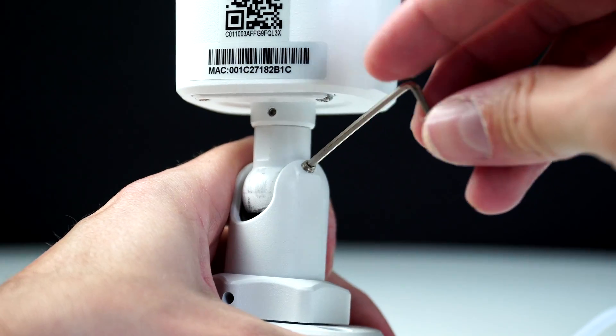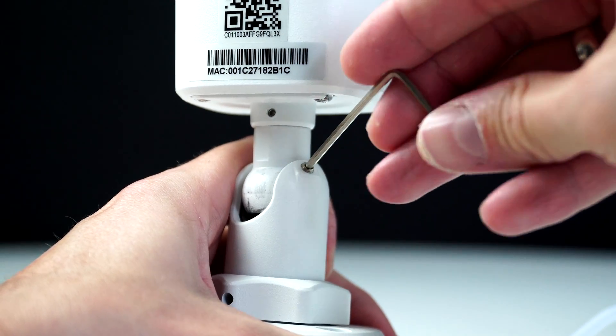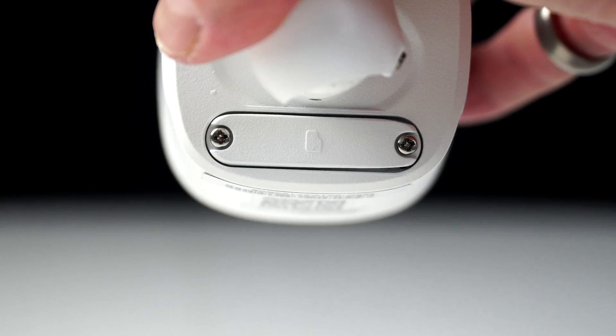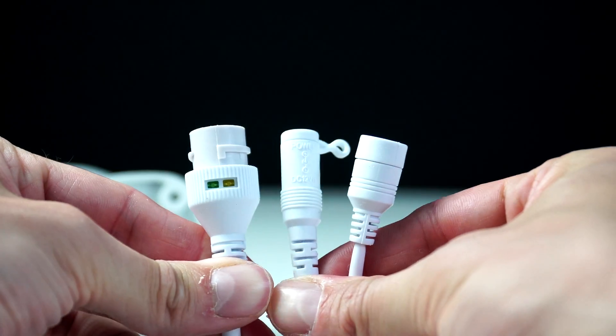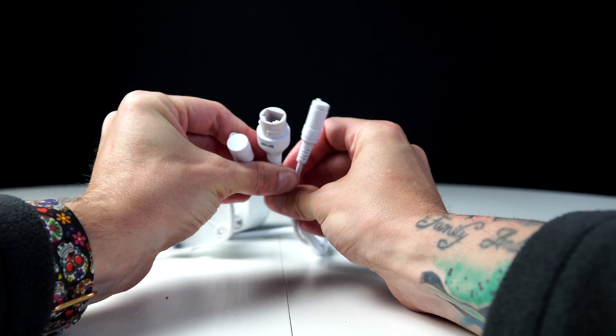Now use the Allen key that comes in the pack to tighten up this screw, which will also lock the camera in place. Here's where we store the micro SD card. We also have the option to save to the cloud, or we can connect these cameras to the NVR box, which will have a hard drive in, which will save all the footage on there.